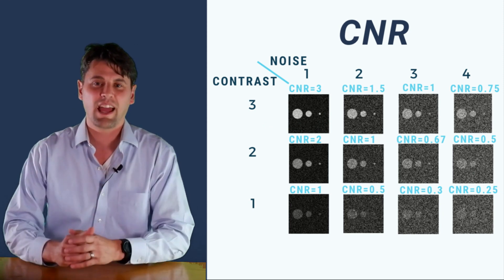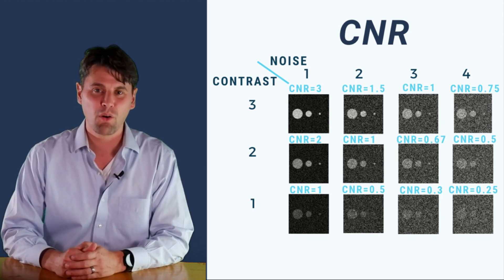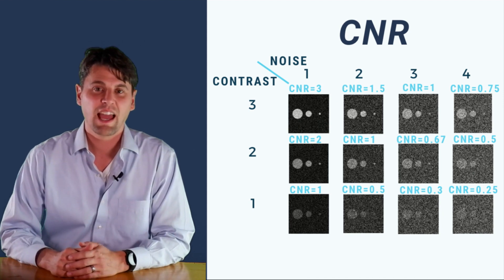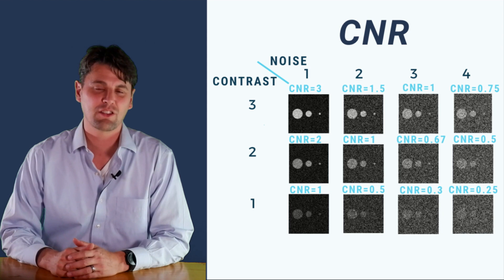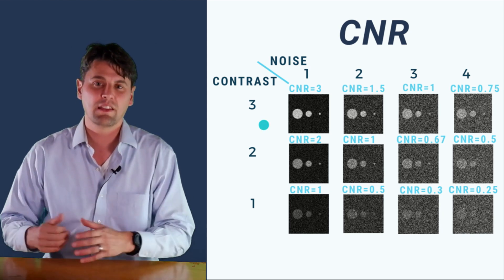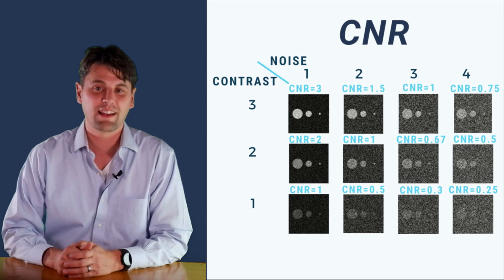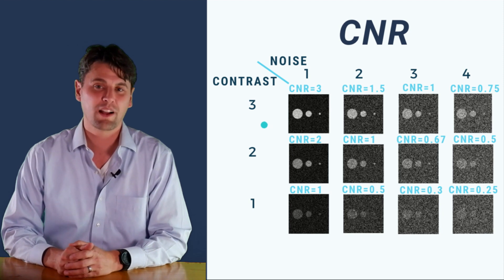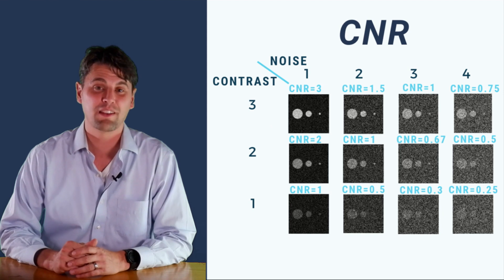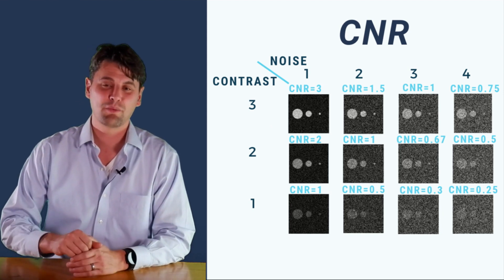Then in the images that have a lower contrast-to-noise ratio, once we start to get more noise, it becomes more difficult to visualize these objects. And the smaller object is actually going to be the one that becomes difficult to see. Even while we can see the larger objects, we're going to lose the ability to visualize that smaller object more quickly. For more information on the visualization of objects in noisy background, especially when their contrast is changing, see our video on the Rose model coming up.